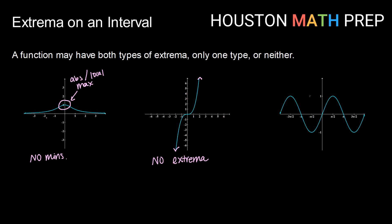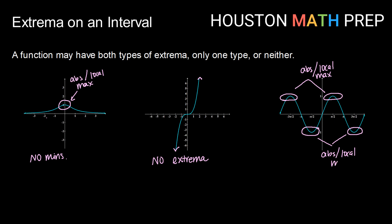We can also have graphs that have both types and, in fact, multiple of each type. Here we have our typical sine wave, and I can see two hilltops in the frame. Knowing what I know about this sine wave, these are also going to be the tallest y values, so these are going to be both absolute and local maximums. And these valley troughs down here are going to be absolute and local minimums. The sine wave taken over the entire real number line would have infinitely many absolute and local maximums — every top of that wave — and infinitely many absolute and local minimums, because every valley trough would be an absolute or local minimum.